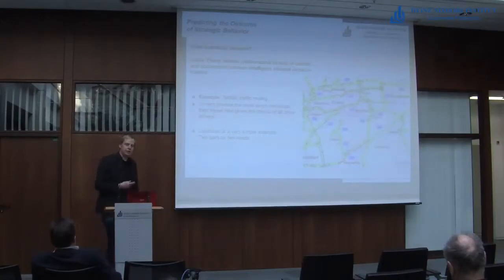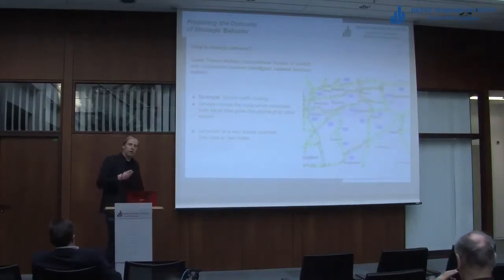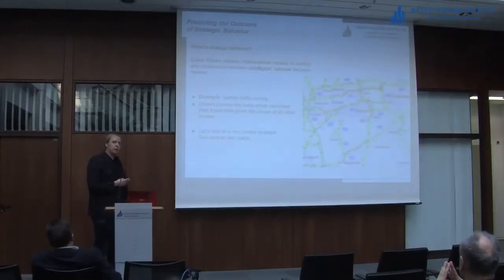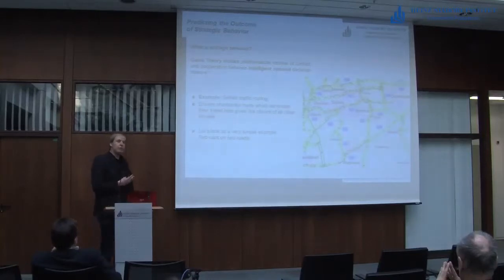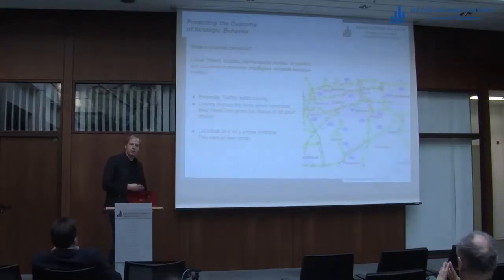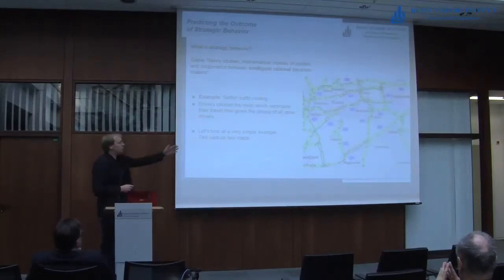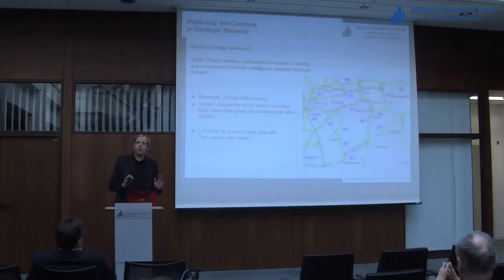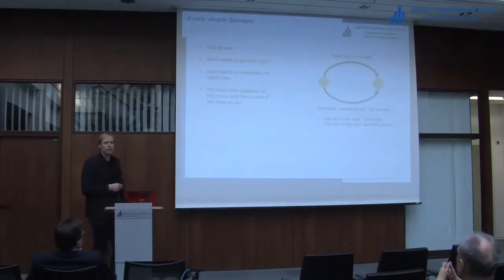That is something we want to study in game theory. In this example of traffic routing, we assume that each of these drivers wants to choose a route that minimizes their respective travel time. Of course, this decision's outcome depends on the chosen routes by others. Instead of looking at a more complicated example, we start with a very simple example: two cars on two roads.